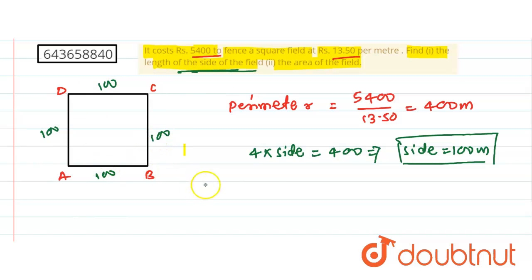Now we want the area of this square field. It is simple. The formula for area is side square. This is nothing but 100 square. What is 100 square? It is 10,000 square meters. So this is the area of that square. Hope you have got this. Thank you.